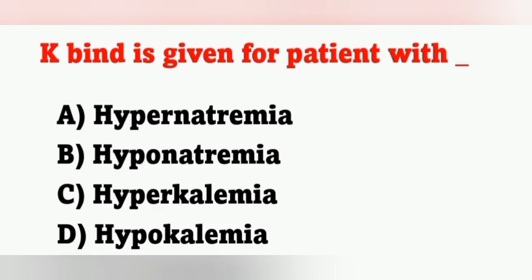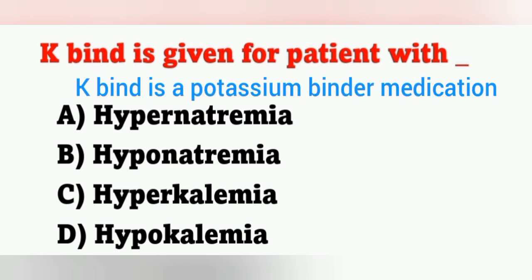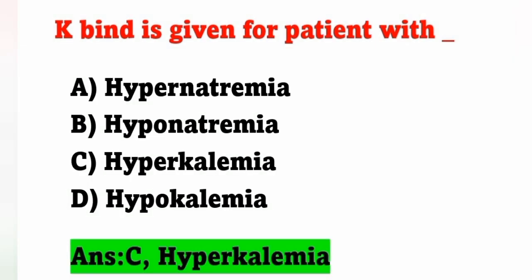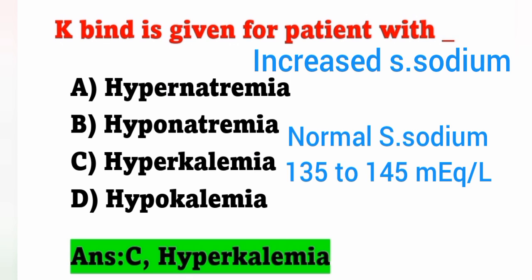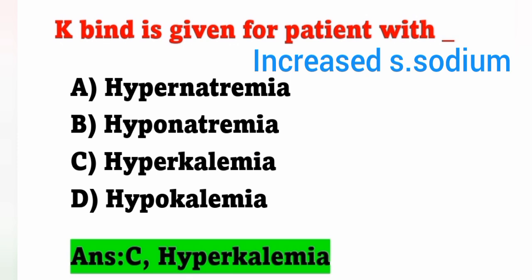Next question: K-bind is given for a patient with — options: A) hypernatremia, B) hyponatremia, C) hyperkalemia, D) hypokalemia. K-bind is a potassium binder medication used in hyperkalemia. It helps bind and prevent absorption of potassium in the gastrointestinal tract. Normal serum potassium is 3.5 to 5.1 mEq/L; normal sodium is 135 to 145 mEq/L. Option C — hyperkalemia — is the correct answer.